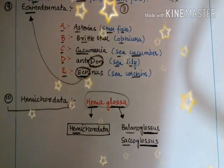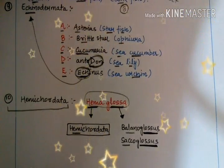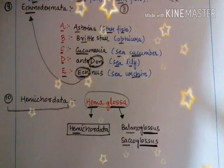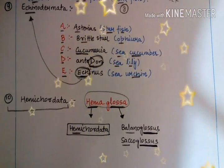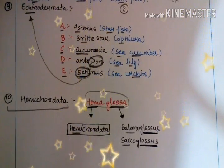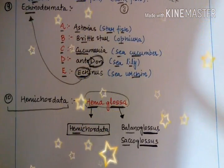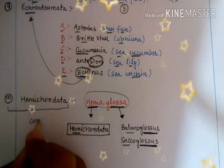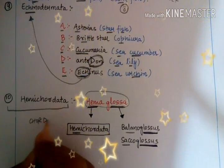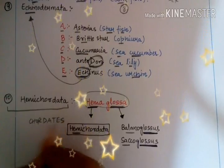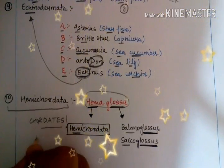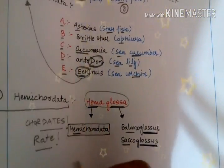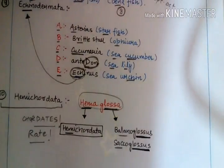So these are the different tricks for non-chordates up to Hemichordata — chordates are not included in these tricks. I hope these tricks are going to help you a lot in your examination. Thank you so much for watching. If you liked the video, hit the like button, and if you are new, please subscribe. The tricks for chordates will be in the next video — don't forget to rate my tricks out of 10 in the comment box!